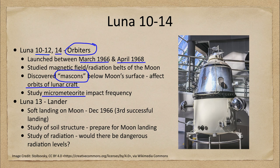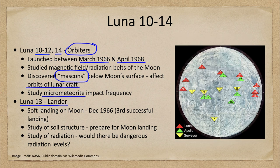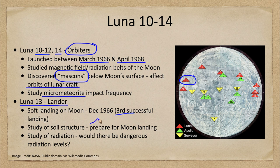The Luna 13 spacecraft was a little bit different. This was actually a landing craft, and we can see where it landed here — the other Lunas are marked in red, and Luna 13 is off over here as to where it landed. This was the third successful soft landing on the surface of the moon, in December of 1966.